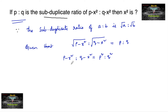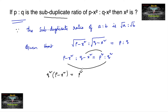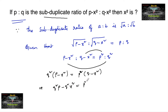We know that product of extremes is equal to product of means, so we can write: (p minus x square) into q square is equal to p square into (q minus x square). Expanding: q square times p minus q square times x square is equal to p square times q minus p square times x square.